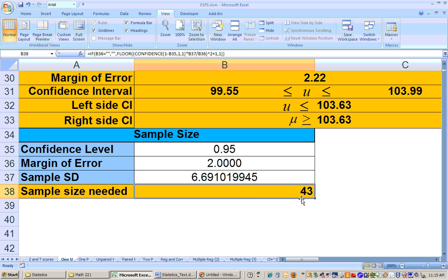Now 43 is not the answer to this problem, because it said how many more air flights would you need to sample. So we already sampled 35.